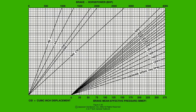In a brake horsepower chart, the brake horsepower is found at the top of the chart. The cubic inch displacement for the various engines covered in the chart is found in a series of diagonal lines on the left side of the chart. The diagonal lines on the right side indicate engine speed in RPM, and the brake mean effective pressure is given at the bottom right of the chart.